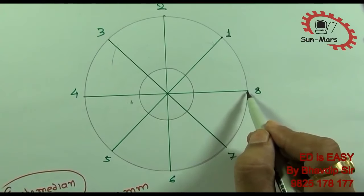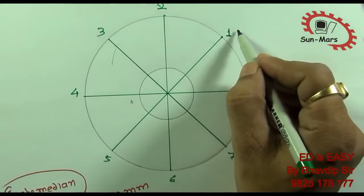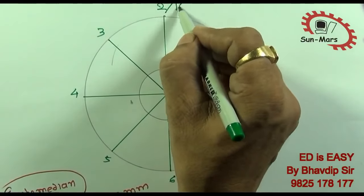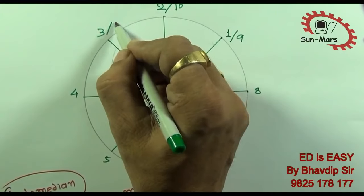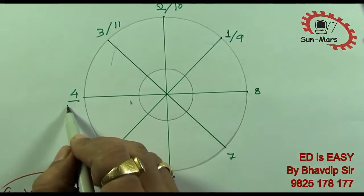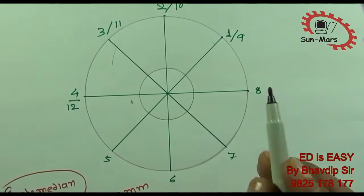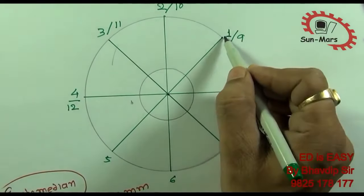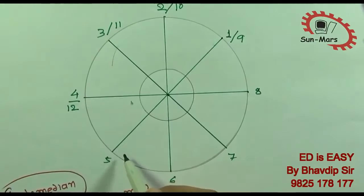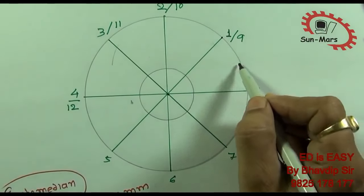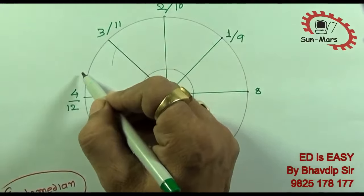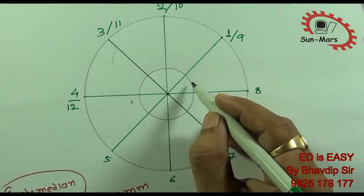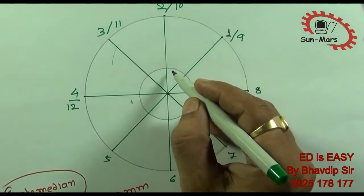This first revolution will not be done here — this will be the second. And here we will do nine, ten, eleven, and twelve. Here we will start the spiral. This will be 1.5 revolutions, with 45 degrees for each of the 12 segments.